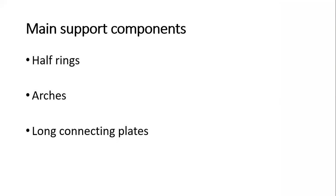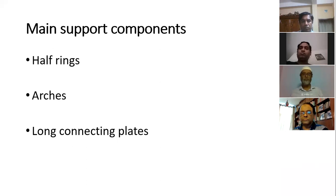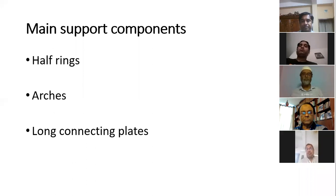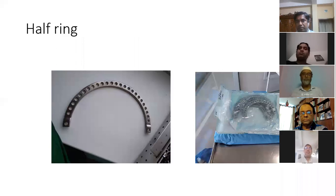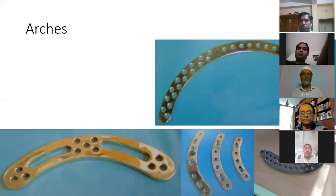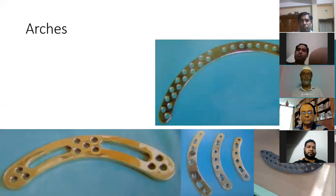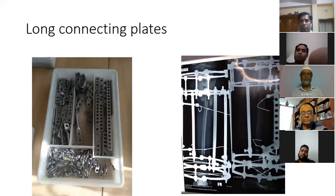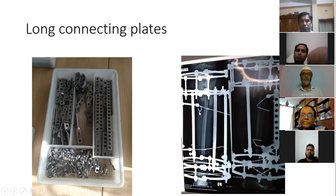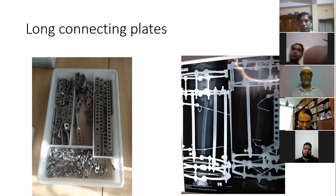Yesterday Dr. Arif already demonstrated the main support components. I will just review those topics briefly. There are half rings and arches — you can see different arches: Italian arch, Russian arch, pediatric arch, and upper femoral and pelvic arch, which looks like a banana and is sometimes called the banana arch. There are also long connecting plates — you can see them in the basket. An X-ray shows the use of long connecting plates with olive wires for fibula transport and fibula transfer for materialization.